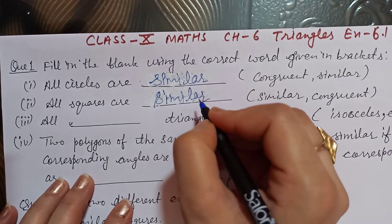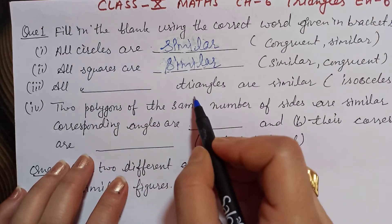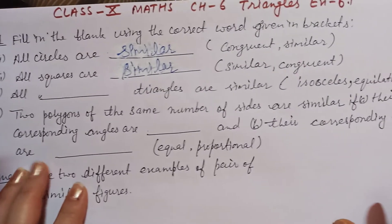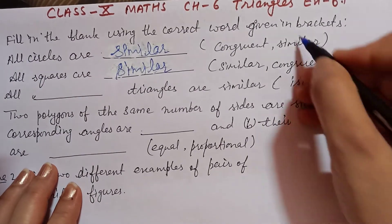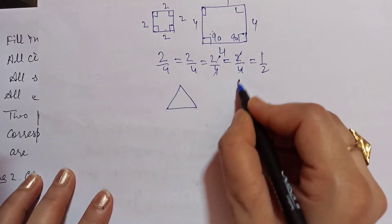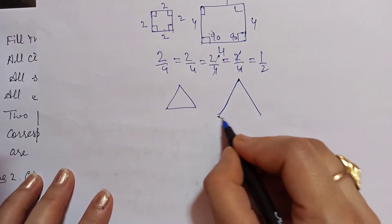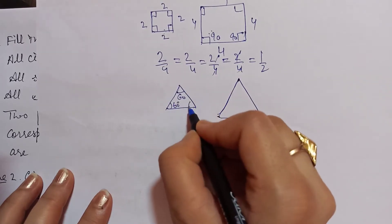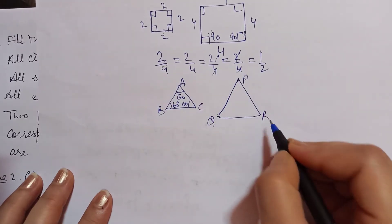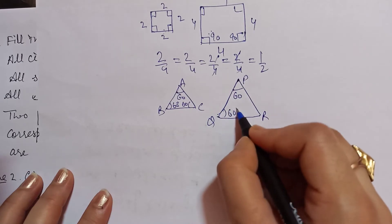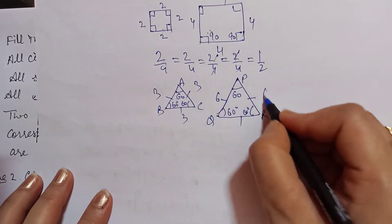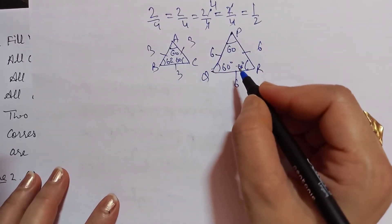Third blank: all equilateral triangles are similar. We have an equilateral triangle and a bigger equilateral triangle. The angles are 60 degrees each. We have done the introduction — each angle is 60 degrees for both triangles. We have taken the sides: the angles are the same.